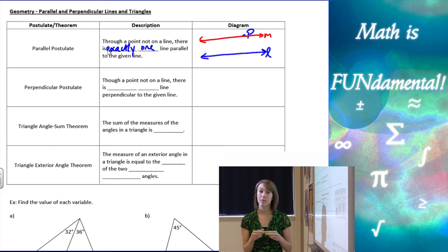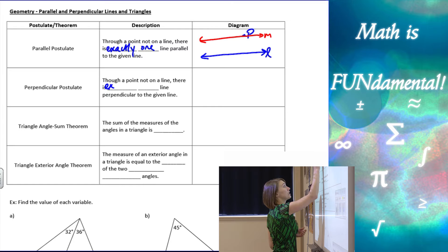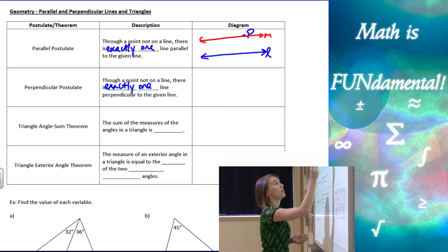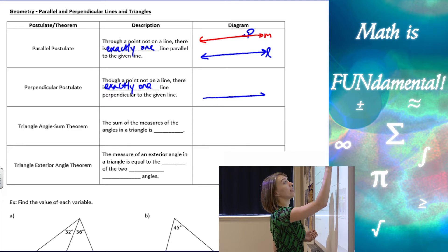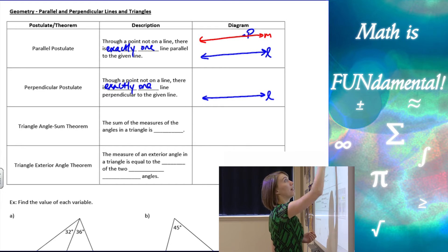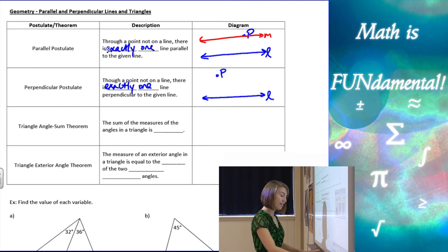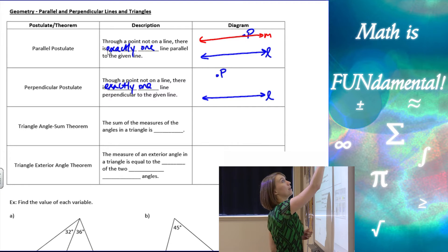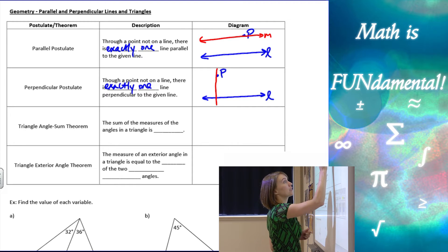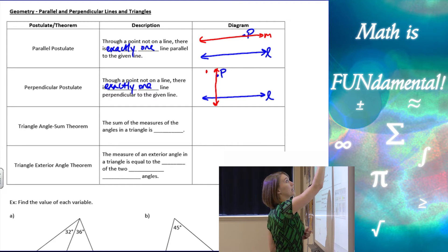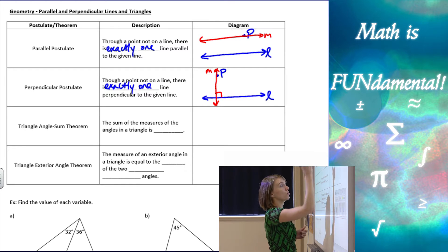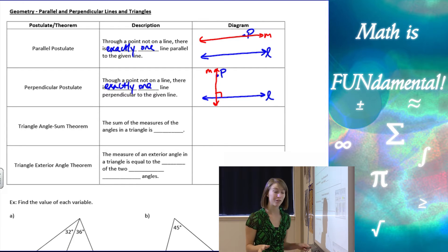Similarly, we have the perpendicular postulate, which says: through a point not on a line, there is exactly one line perpendicular to the given line. So if I have line L and a point P not on line L, then there's only one line I can draw through P that's perpendicular to L. We'll make our little perpendicular mark to show that it's 90 degrees.